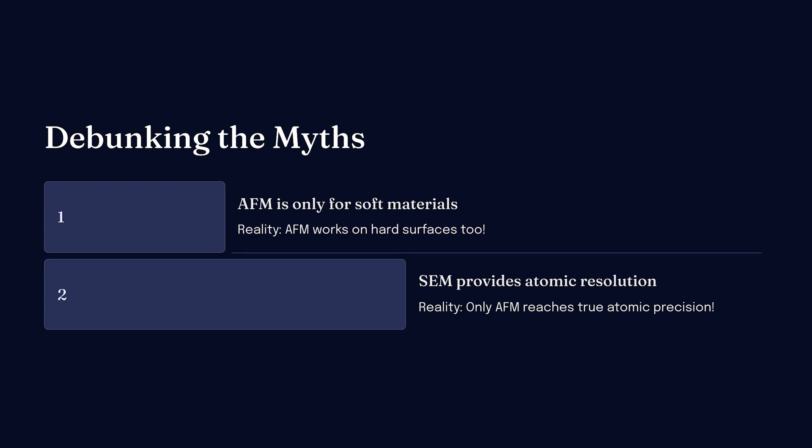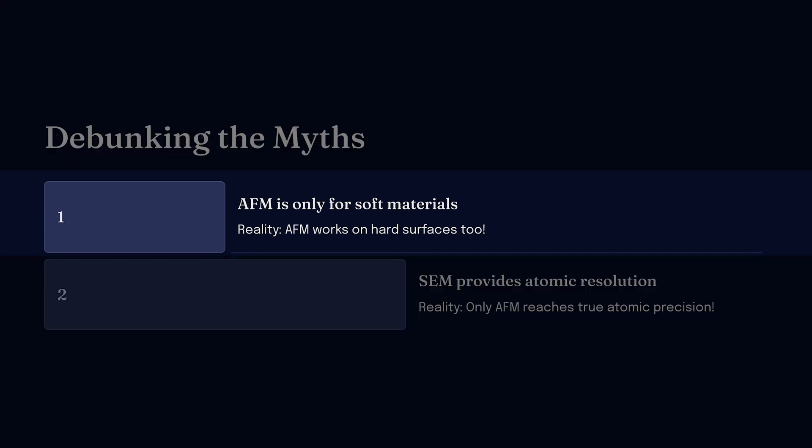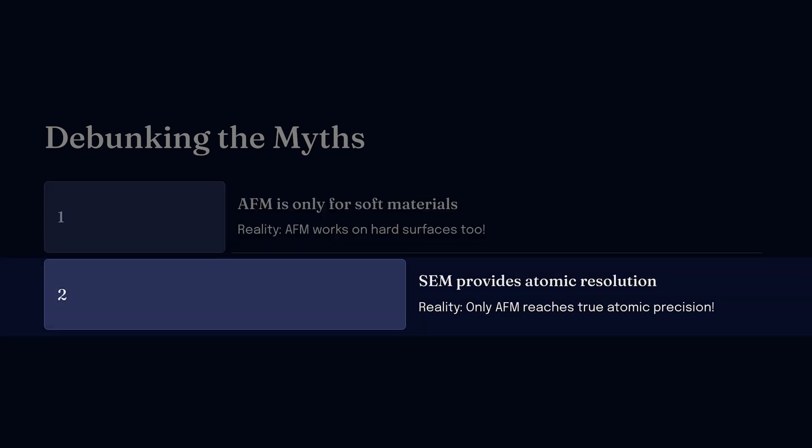There are also some common misconceptions. Myth: AFM is only for soft materials. Reality: AFM can analyze even hard surfaces, measuring mechanical properties at the nanoscale. Myth: SEM provides atomic resolution. Reality: while SEM offers high resolution, only AFM reaches true atomic precision.